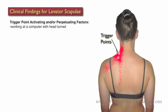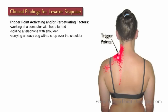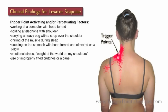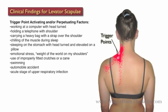Factors that may activate or perpetuate levator scapula trigger points include: working at a computer with the head turned, holding a telephone with the shoulder, carrying a heavy bag with the strap over the shoulder, chilling of the muscle during sleep, sleeping on the stomach with the head turned and elevated on a pillow, emotional stress described as the weight of the world on their shoulders, the use of improperly fitted crutches or a cane, swimming, a car accident, and the acute stage of upper respiratory infection.